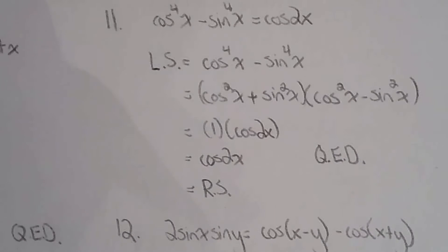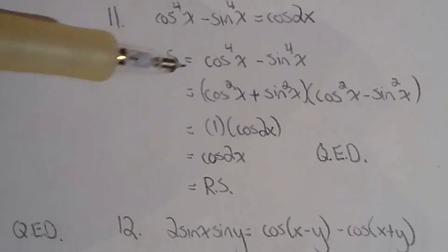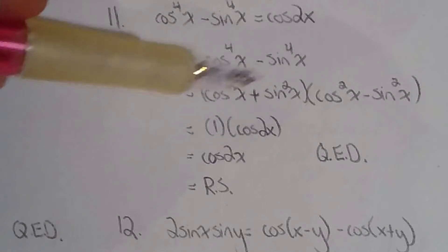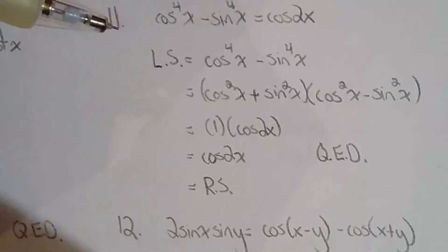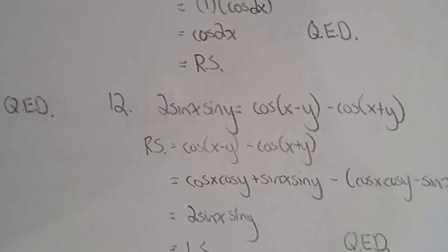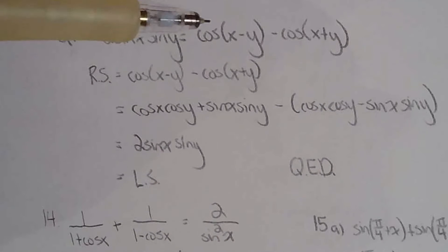Question 11 is a great Grade 12 question. You have to factor first, then use the Pythagorean identity from Grade 11, and then the double angle formula for cosine. Students struggle with this one because if you don't see the difference of squares, it can be quite troublesome.